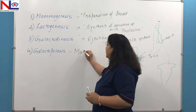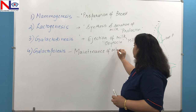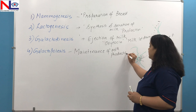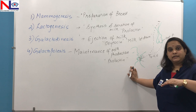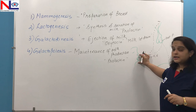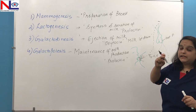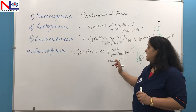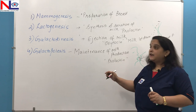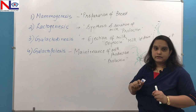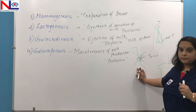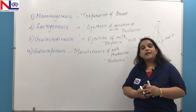The last phase is galactopoiesis, which means the maintenance of milk production. The responsible hormone in this phase is prolactin. Although prolactin is decreasing after delivery, the main reflex that is the suckling reflex is very essential to keep the prolactin level high. Prolactin is responsible for continuously producing milk, but if the baby is not suckled then milk production will be inadequate. As much as the baby suckles, that much milk will be produced.